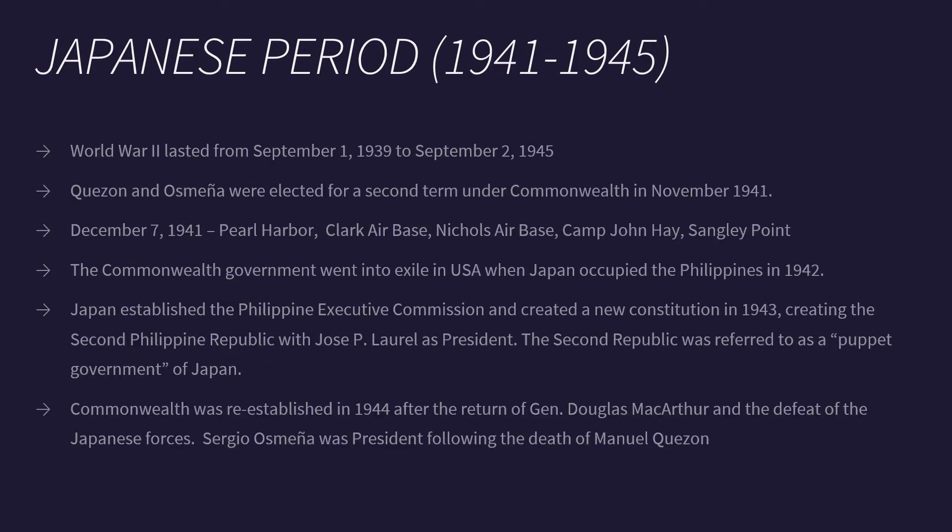The Japanese period is the shortest political period, spanning only three years from 1941 to 1945. World War II began on September 1, 1939 and lasted up to September 2, 1945. Quezon and Osmeña were elected for a second term under the Commonwealth in November 1941. But on December 7, 1941, Japanese forces attacked Pearl Harbor — to ensure that America could not react to their next military advances. Ten hours after the attack on Pearl Harbor, Japan attacked simultaneously the Philippines, Malaysia, and Indonesia.